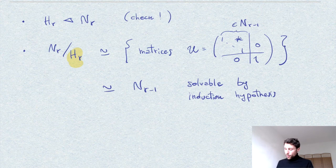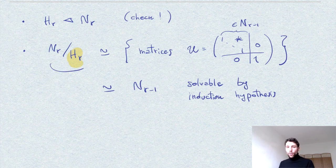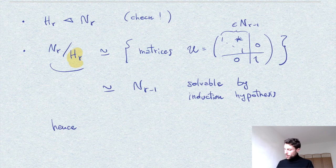Therefore, we can conclude that the quotient N(R)/H(R) is solvable. By our strategy, this completes the proof that N(R) is solvable — and with that, the full argument proving that B(R), the group of upper triangular invertible matrices, is solvable.